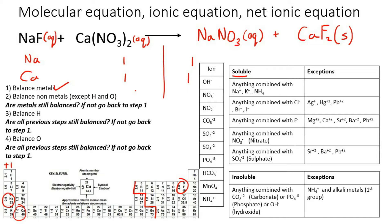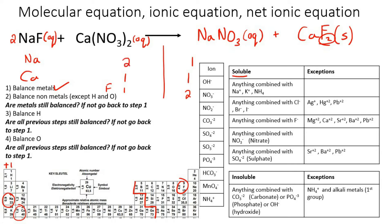On the left-hand side we have one fluorine, and on the right-hand side we have two. So that means we're going to put a 2 coefficient in front of NaF. You're not allowed to change the subscript there because Na is plus one and F is minus one — they are already balanced internally. So now that you've put a 2 in front, that means you have two Na's on the left but only one on the right, so you're going to put a 2 in front of NaNO3 as well.